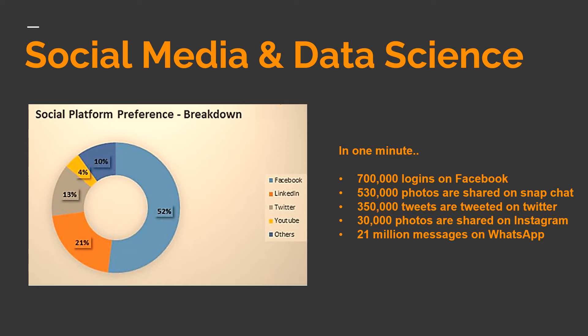An article from Exelocom states what happens on the internet in a minute. In one minute, there are 700,000 logins on Facebook, around 530,000 photos are shared on Snapchat, around 350,000 tweets are tweeted on Twitter, 30,000 photos are shared on Instagram, and 21 million messages on WhatsApp. This is by the year 2016.